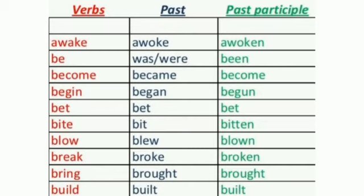The verbs shown in red color are base verbs. Here are irregular verb forms — base, past, and past participle: awake / awoke / awoken; be / was or were / been; become / became / become; begin / began / begun; bet / bet / bet; bite / bit / bitten; blow / blew / blown; break / broke / broken; bring / brought / brought; build / built / built.